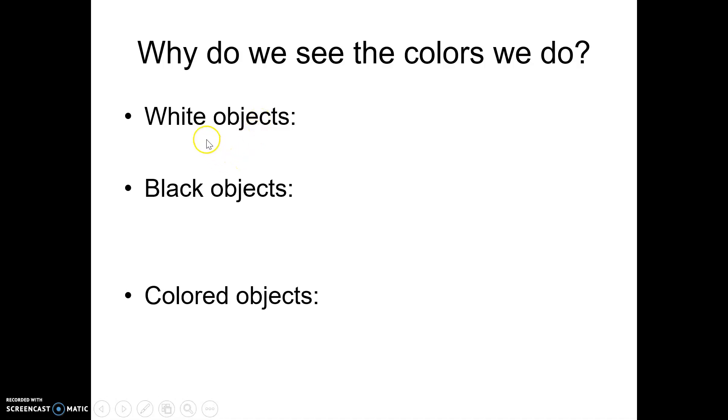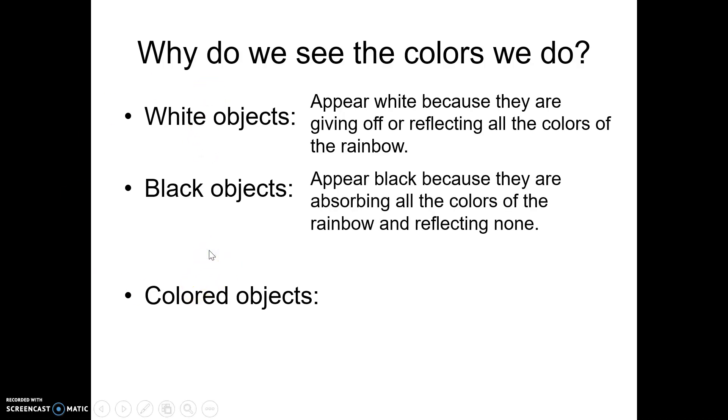If you see white, that's all colors of the rainbow as opposed to black is then the absence of color. Things appear black because the object, the T-shirt or the car or whatever you're looking at, is absorbing all of the wavelengths of color and reflecting nothing to your eye. So your eyes picking up nothing, which is why it looks black.